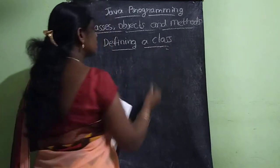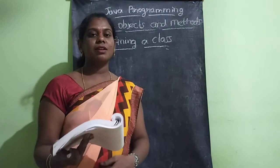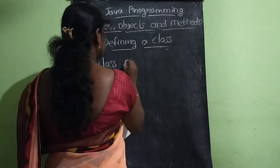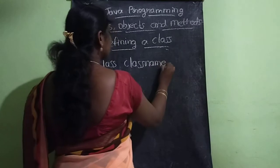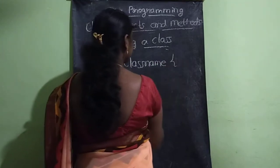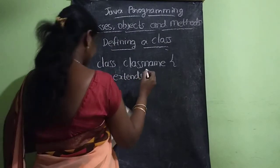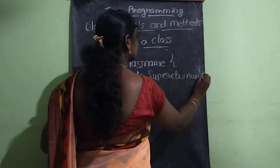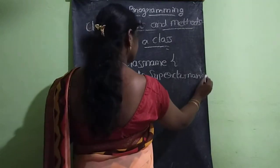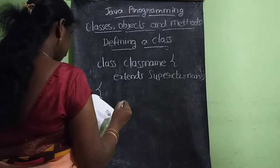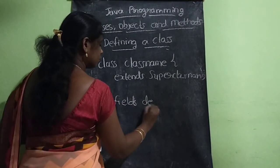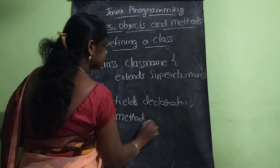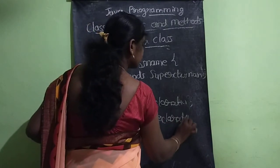Defining a class. A class is a user defined data type. The syntax is: the keyword 'class' followed by the class name. That is optional - you can also have 'extends' followed by a super class name, if you are using inheritance. Within the class you have fields declaration and then method declaration.